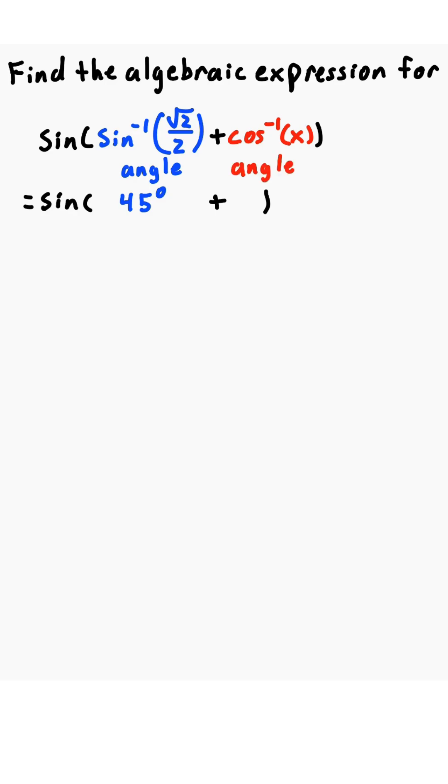And cosine inverse of x is another angle. We don't know this angle, so we'll call it theta. By the sine sum formula, we have sine of the first times cosine of the second plus cosine of the first times sine of the second. Okay.